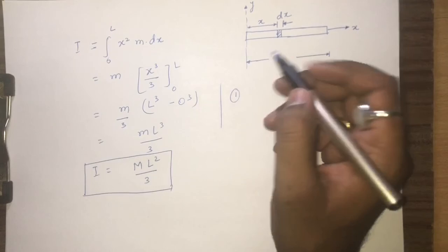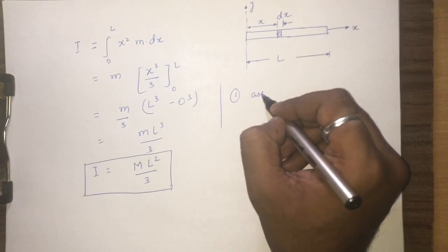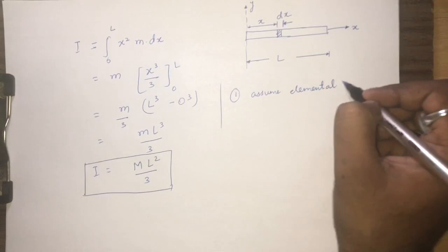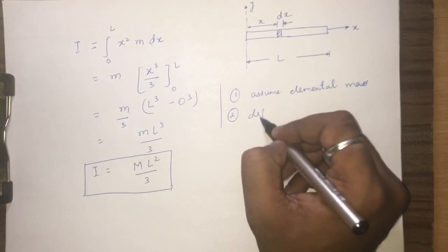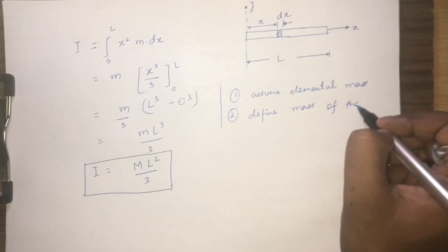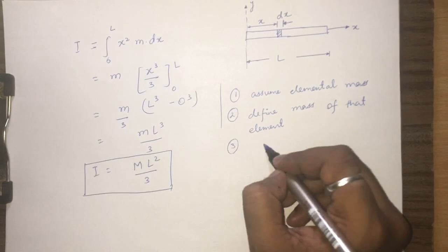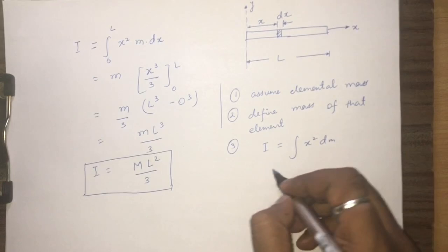In this way we can easily calculate the mass moment of inertia. The steps are: first, assume an elemental mass at some distance; second, define the mass of that element; third, use the integration equation I = ∫r²·dm with the appropriate limits. In the next lecture we will solve some more problems. That is all for today — thank you.